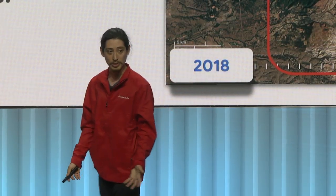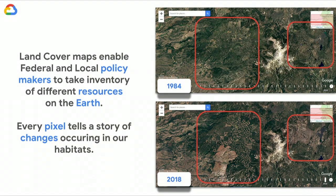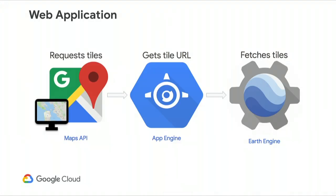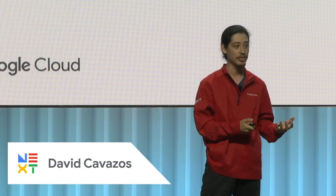These land cover maps are very useful for decision makers and organizations to make more informed decisions about Earth's resources. Every pixel tells a story, especially when we see change. One of the cool things about Earth Engine is that once data is in Earth Engine, it's accessible to external applications, which made it possible to build a custom web application using AngularJS and the Maps API to request and render both land cover images and Landsat images.